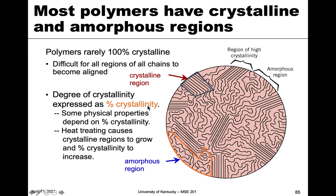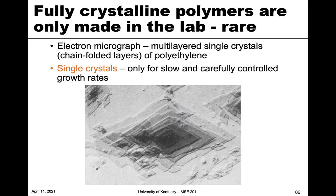We want to describe that crystallinity with a percent — how much is amorphous and how much is crystalline. We can use heat treatments to affect the amount of crystallinity and favor crystalline growth, so there are things we can do to adjust that number for a particular material. Fully crystalline polymers are basically rare and only made in the lab, but here's an example: an electron micrograph of a single crystal of polyethylene, grown very carefully using the chain folding model.